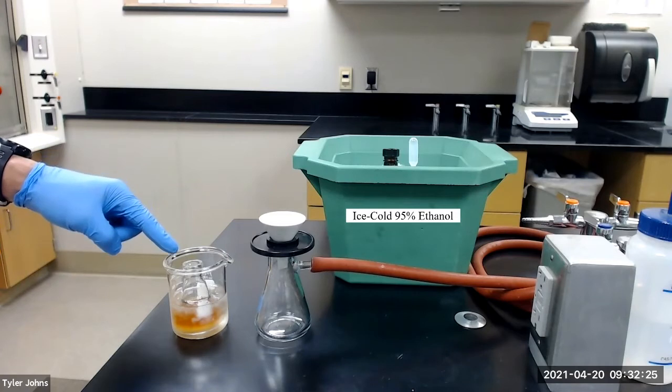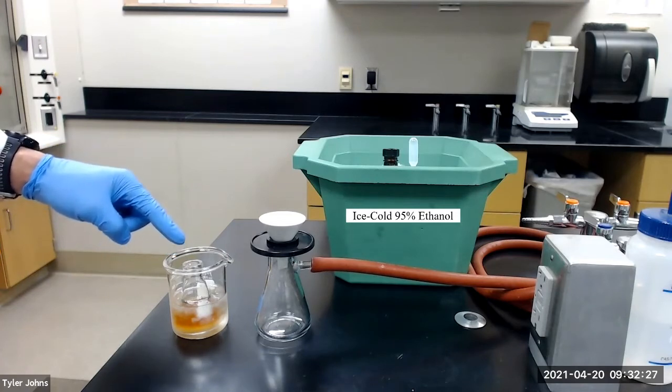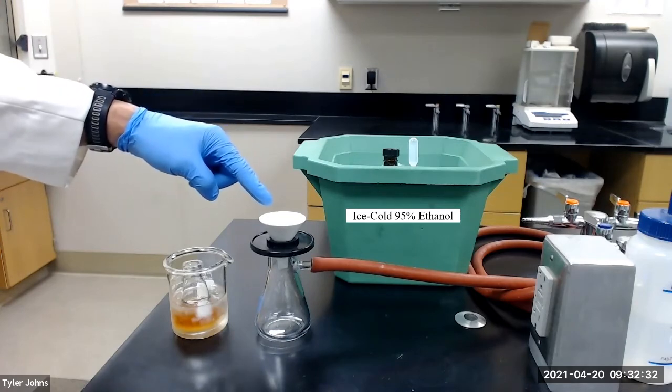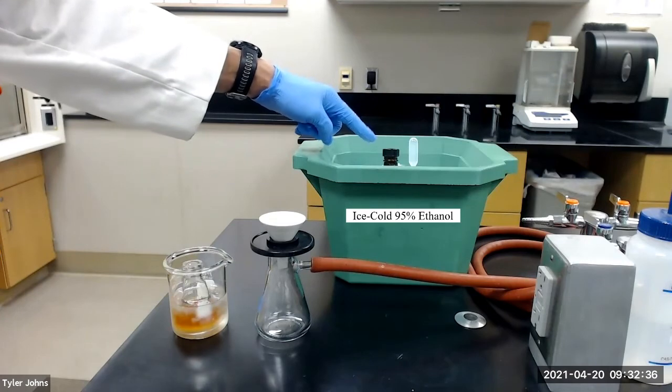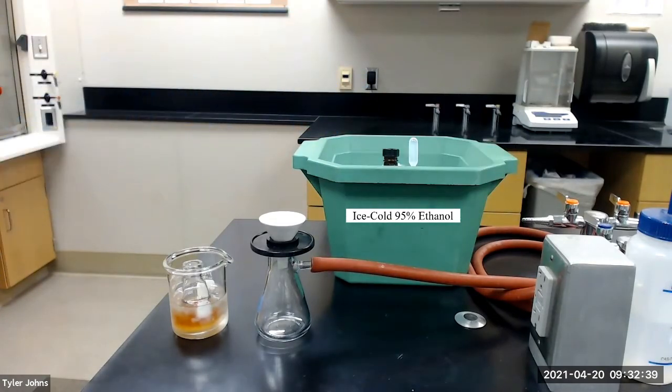After crystallization is complete, we will collect the recrystallized substituted chalcone crystals by vacuum filtration with a Hirsch funnel, and we will use ice cold 95% ethanol to aid in the transfer and the washing of our crystals.